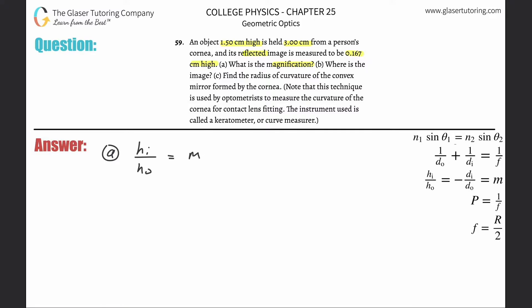They're telling us certain values. The height of the image is measured to be 0.167 centimeters - you can leave it in centimeters because this is just a ratio - divided by the height of the object, which is 1.5 centimeters. So 0.167 divided by 1.5 equals the magnification, which is 0.111, and it's unitless.